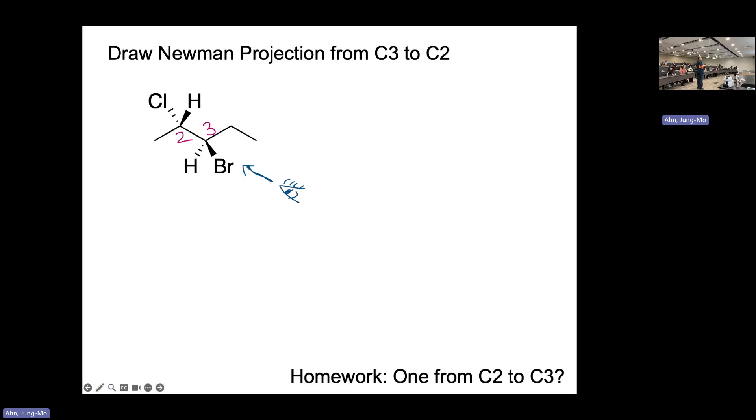C3 becomes top, C2 goes to that. So we've got to look at the molecule this way. After we do this, I want you to do the same Newman projection but in the reverse direction.